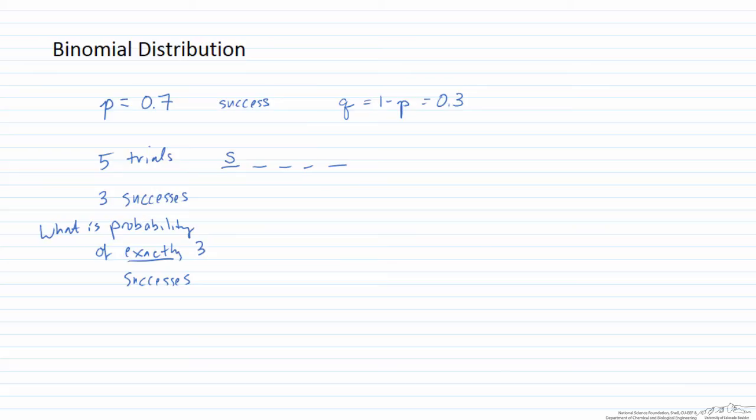So I am going to denote successes by S. So I can have success, success, success, failure, failure. If I had that, what would be the probability that that would occur? Well we just take the probability of success and we are going to cube that basically because we have three successes. But then we need to multiply by the probability of failure which is 0.3 because those three successes are followed by two failures. So this then would be the probability of this exact arrangement. And you have to keep that in mind.